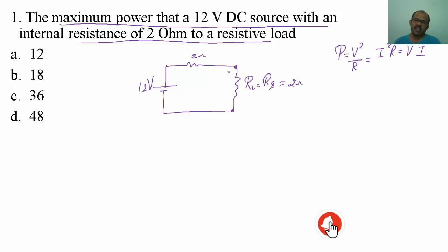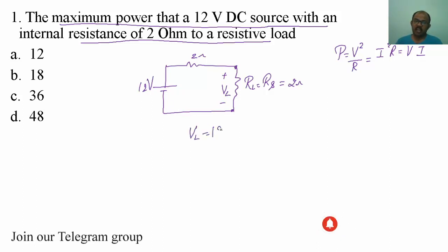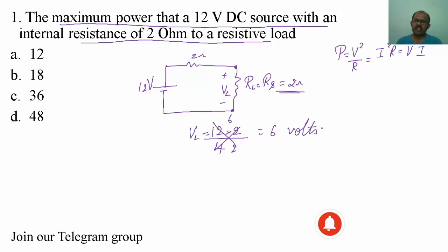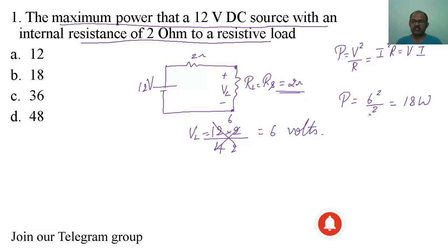Let me calculate the voltage across the load VL. VL is given by the total voltage 12, applying the voltage divider rule, multiplied by the resistance of that branch which is 2, divided by the total resistance 2 plus 2 equals 4. So I get VL equals 6 volts. Power equals 6 squared divided by 2, which equals 18 watts. So the suitable answer is option B.